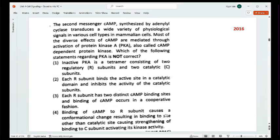Let's see, inactive PKA is a tetramer consisting of two regulatory and two of the catalytic subunits. Second option, each R subunit binds the active site in the catalytic and inhibits the activity of the catalytic subunit. Then each R has two distinctive cAMP binding sites. Fourth, binding of the cAMP to the R subunit causes a conformational change in binding site other than the catalytic site causing strengthening of binding of C subunit activating its kinase activity.